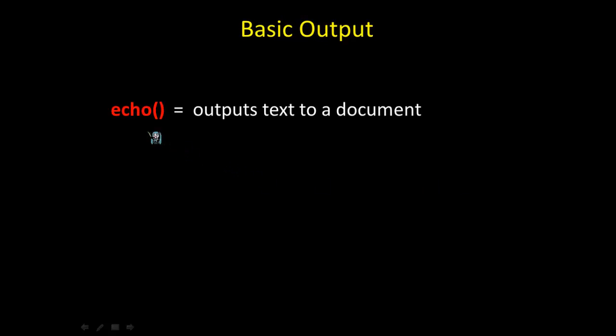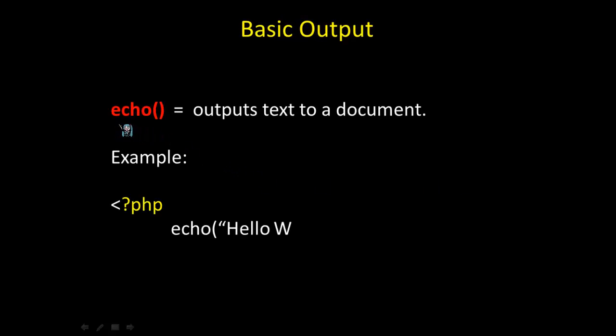We should start with how to get some basic output from PHP, and for this we have the echo function. The echo function outputs text to a document. For example, if I were to call echo and within the parentheses go the argument which is a string literal, so enclosed in double quotes — in this case hello world — that would display hello world in the web page being received on the client.